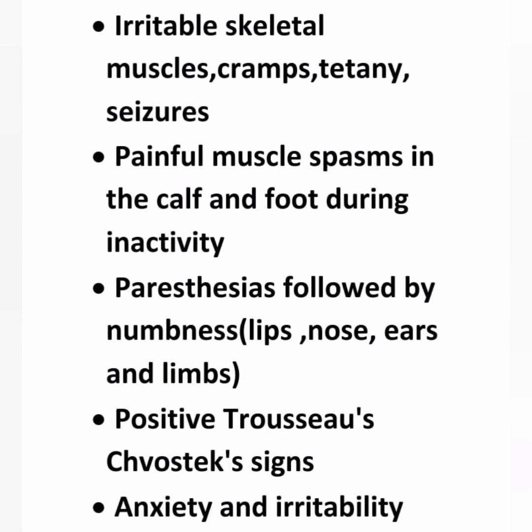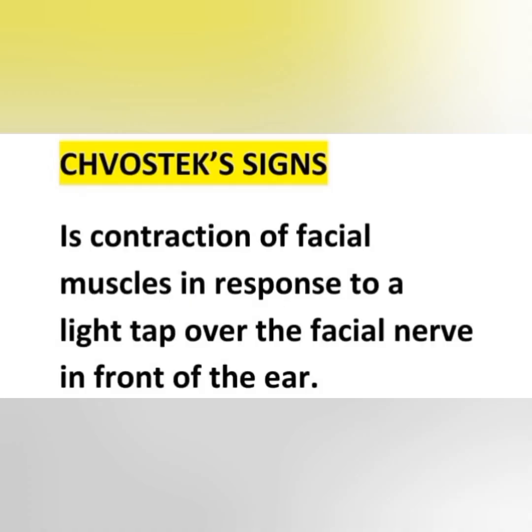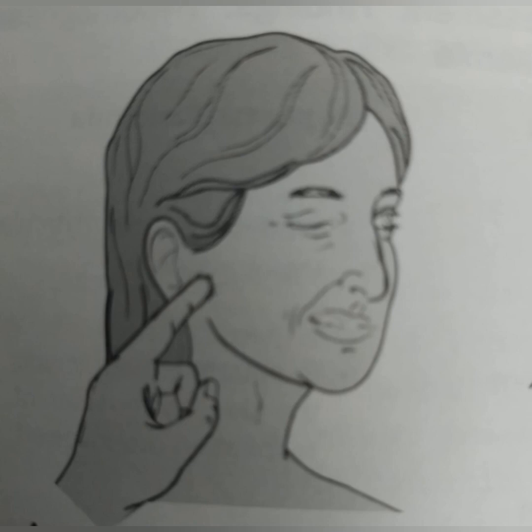Chvostek sign occurs as painful muscle spasm in the calf and foot during inactivity — even while the patient is at rest, they will experience muscle spasm. There is also paresthesia followed by numbness — paresthesia means abnormal, painful sensation — in the lips, nose, and ears. Positive Trousseau sign and Chvostek sign, along with irritability, are also seen. Chvostek sign is a contraction of facial muscles in response to a light tap over the facial nerve in front of the ear. In the picture, we can see a twitching movement when tapping in front of the ear — that is called the Chvostek sign.